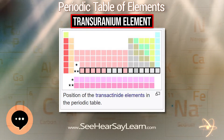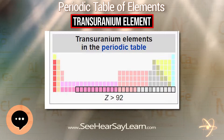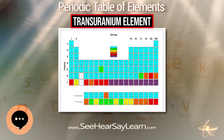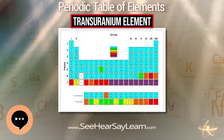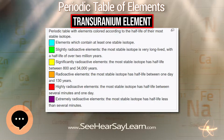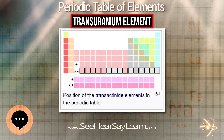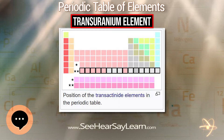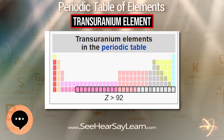Super heavy atoms have all been created since the latter half of the 20th century and are continually being created during the 21st century as technology advances. They are created through the bombardment of elements in a particle accelerator — for example, the nuclear fusion of californium-249 and carbon-12 creates rutherfordium-261. These elements are created in quantities on the atomic scale, and no method of mass creation has been found.